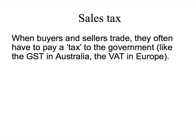When buyers and sellers trade they often have to pay a tax to the government. In Australia that's called the GST or goods and services tax. In Europe it's called a VAT or value-added tax. They're basically the same thing. In the United States they often have state sales taxes.